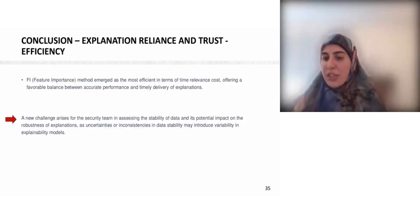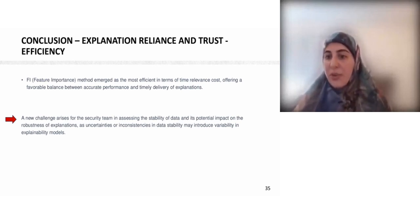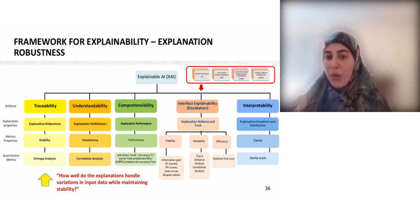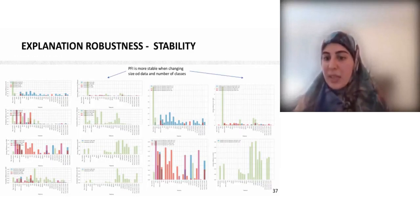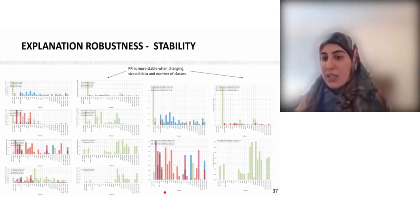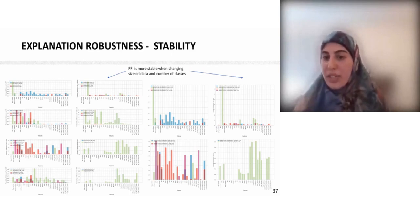The next challenge is to see the stability of data for each explainability model. We applied entropy analysis to measure how well the explanation handles predictions while maintaining stability across different dataset sizes and numbers of classes. We saw that PFI was more stable when changing the size of the data and the number of classes, showing the lowest entropy value.